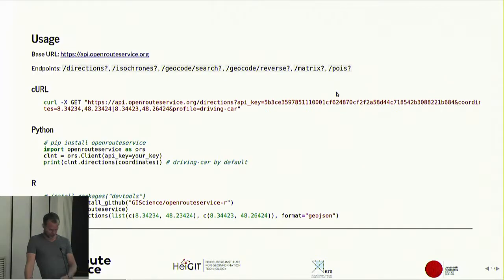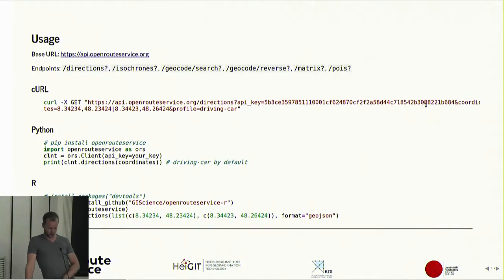Our base URL is api.openrouteservice.org — you just append whatever endpoint you want to use: directions, isochrones, geocode, and so on. You can either curl it directly from a command line or use our Python or R client, which is fairly new.